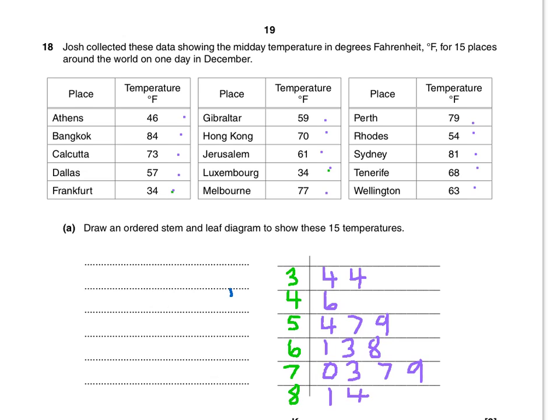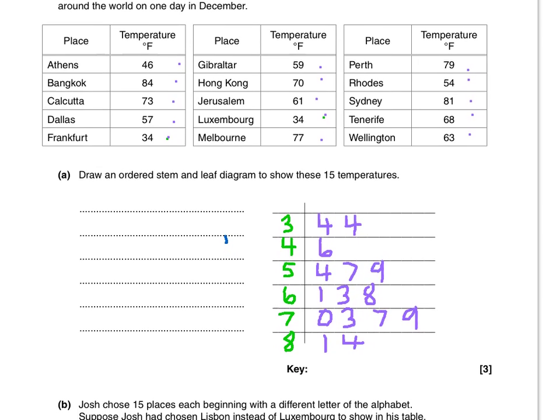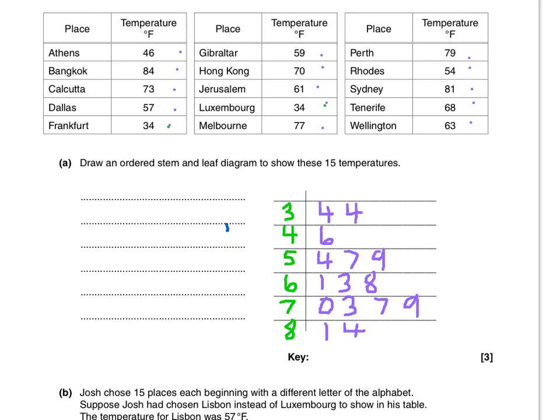I've already made the stem and leaf diagram here. First, I found which tens I had. The lowest number is in the thirties and the highest is in the eighties, so I need to draw out the numbers three to eight on the left-hand side.